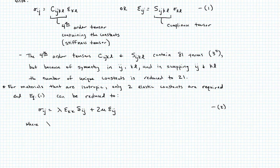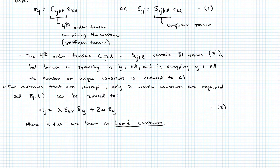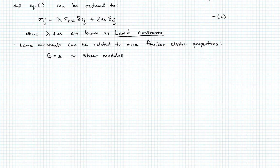Lambda and mu are what's called, or what's known as Lamé constants. So these Lamé constants can be related to the more familiar terms of elastic properties. For example, G, the shear modulus, is equal to mu. We can write down E, the Young's modulus, in terms of lambda and mu, as just mu times (3lambda + 2mu) divided by (lambda + mu).